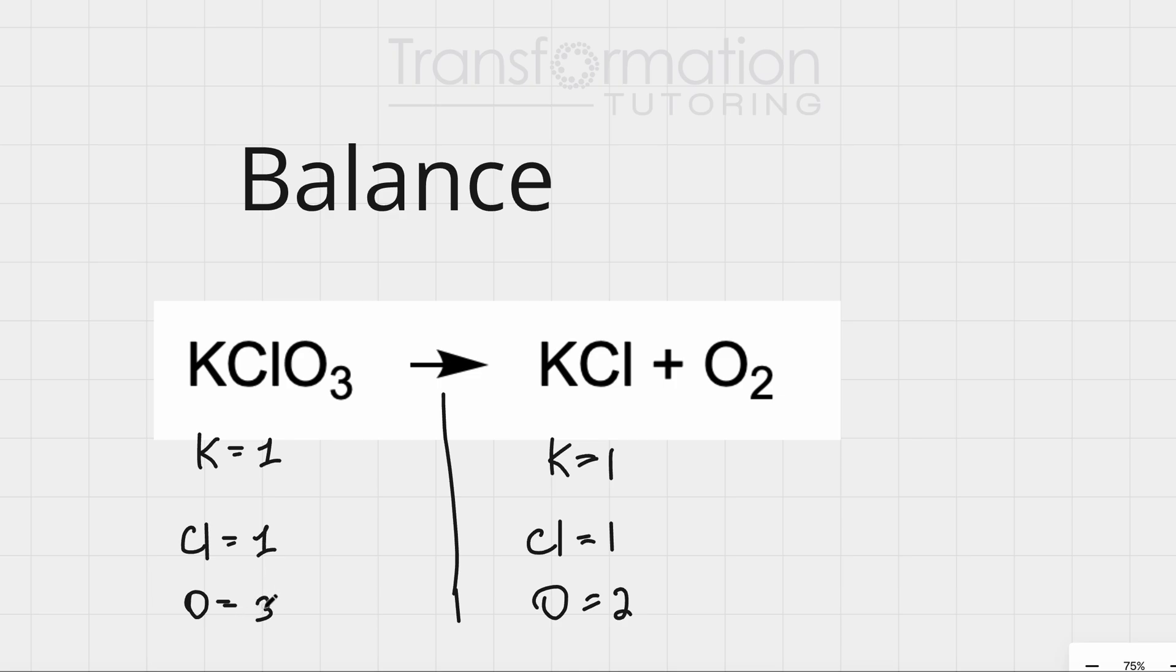So, how can we have this oxygen be equal? Here it is 3 and here it is 2. What we can do is we can multiply the left side by 2 and we can multiply the right side for oxygen by 3. So, 3 times 2 is 6. So, this is no longer 2, it is now 6. And here, oxygen is 6 as well.